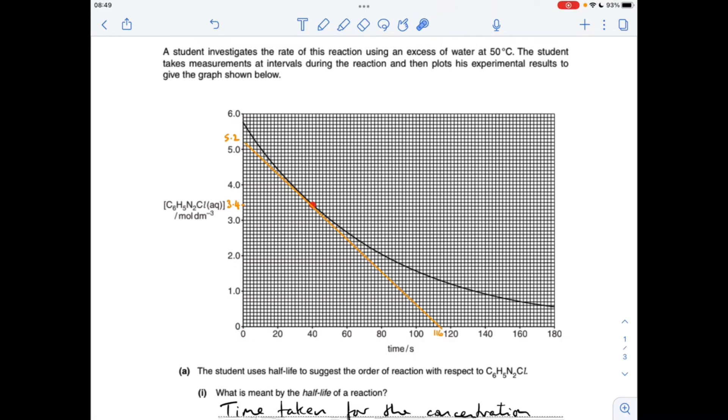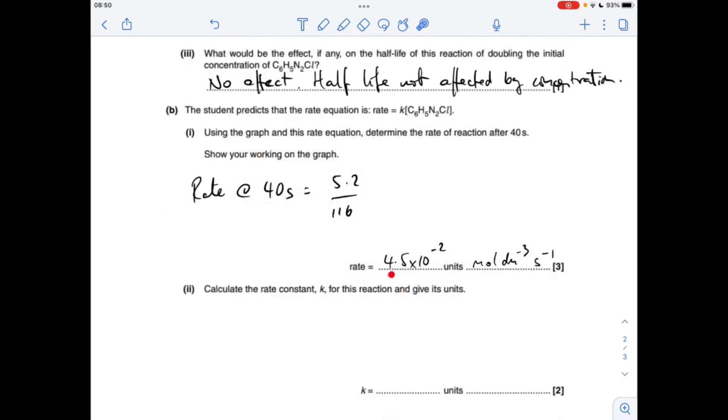So my rate is going to be 5.2 divided by 116. So I'm getting a rate of 4.5 times 10 to the minus 2. And obviously my units are moles per decimetre cube per seconds because we've divided concentration by time seconds.